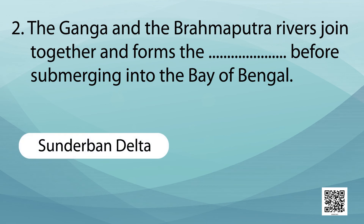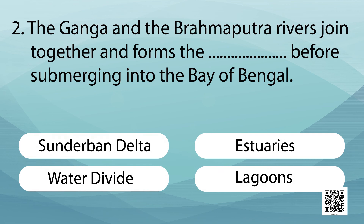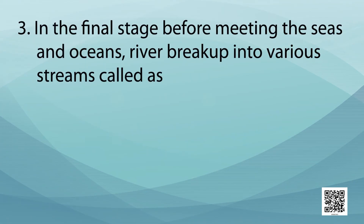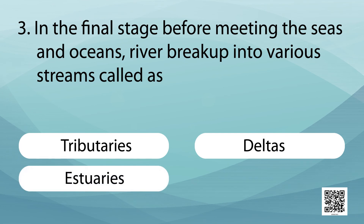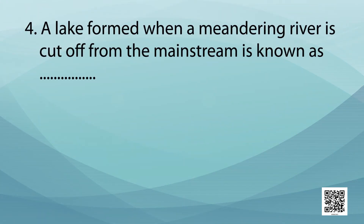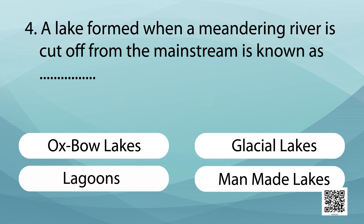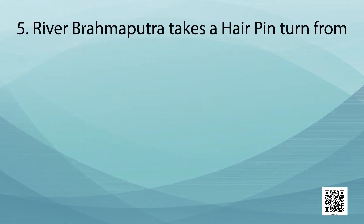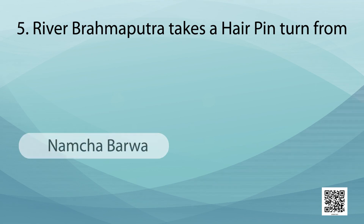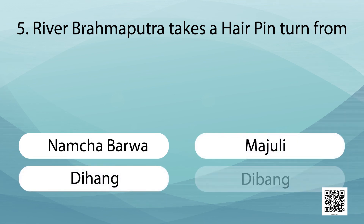In the final stage before meeting the seas and oceans, rivers break into various streams called distributaries. A lake formed when a meandering river is cut off from the mainstream is known as an oxbow lake. The river Brahmaputra takes a hairpin turn at Namcha Barwa.